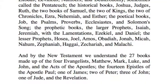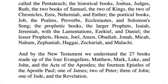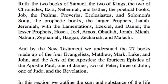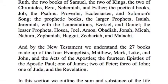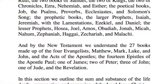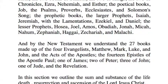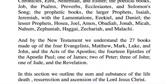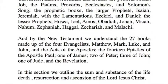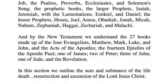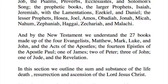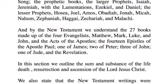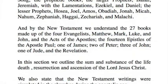The prophetic books — the larger prophets: Isaiah, Jeremiah with the Lamentations, Ezekiel and Daniel. The latter prophets: Hosea, Joel, Amos, Obadiah, Jonah, Micah, Nahum, Zephaniah, Haggai, Zechariah, and Malachi.